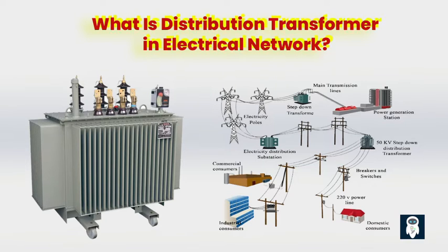Distribution transformers are commonly installed on poles in residential areas or on the sides of buildings where there is a significant amount of foot traffic. In some cases, they may also be located underground in areas where overhead lines are impractical or not permitted. These transformers are designed to be easily accessible for maintenance and inspection purposes.